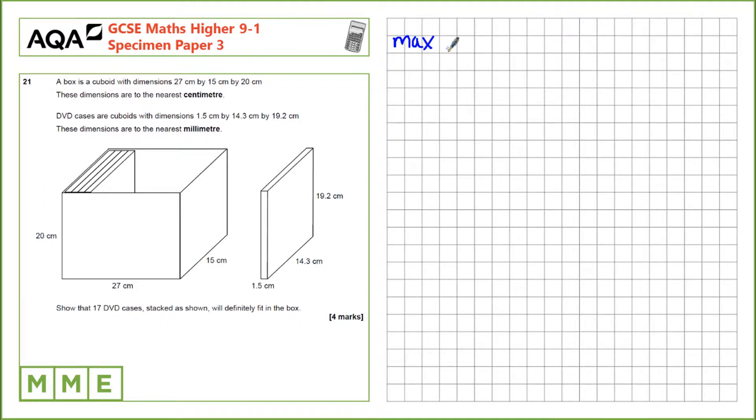So the maximum dimensions of the DVD would be 1.55 centimetres. Rounded down to 1.5 it was just a tiny bit lower. We'll use 1.55 since it saves us messing around with 1.499. So 1.55 by 14.35 by 19.25. These are the upper bounds on the DVD cases if they're correct to the nearest millimetre.